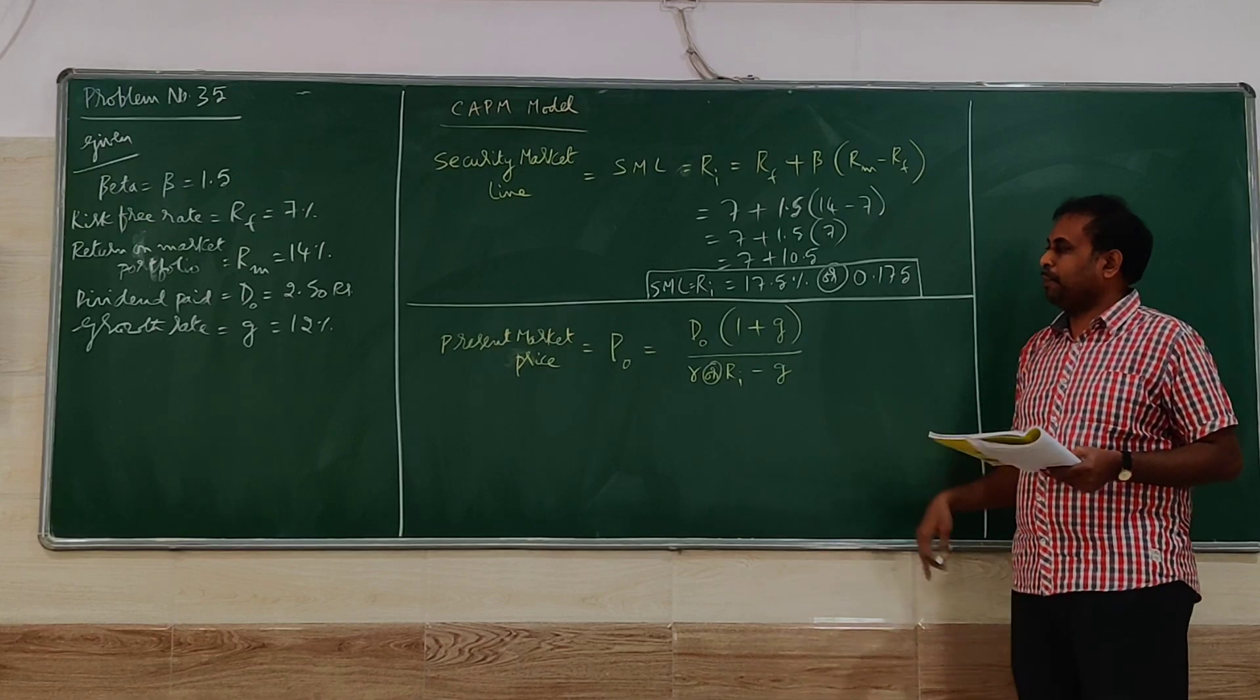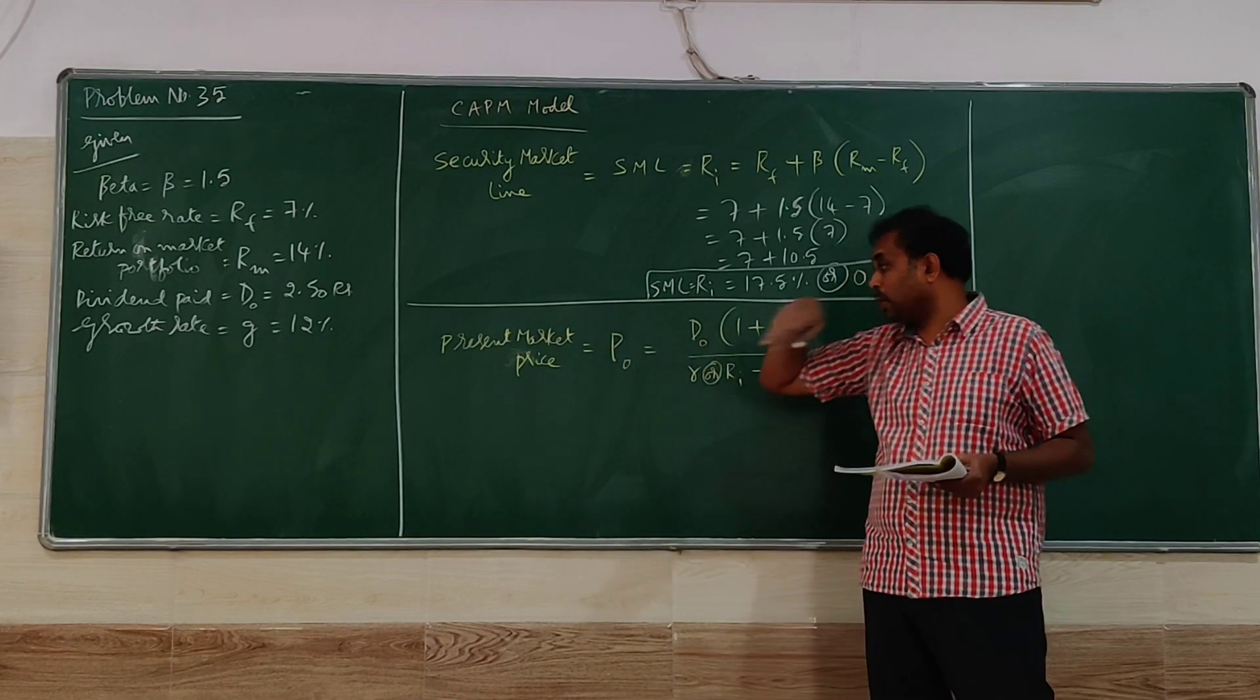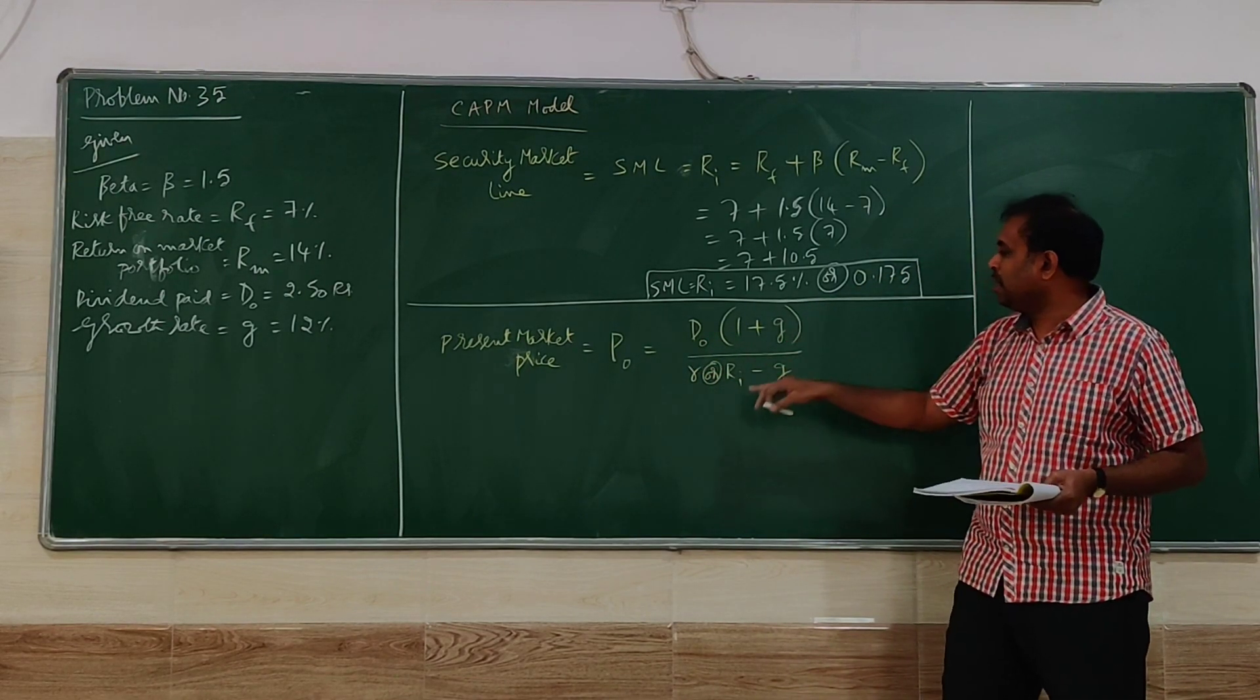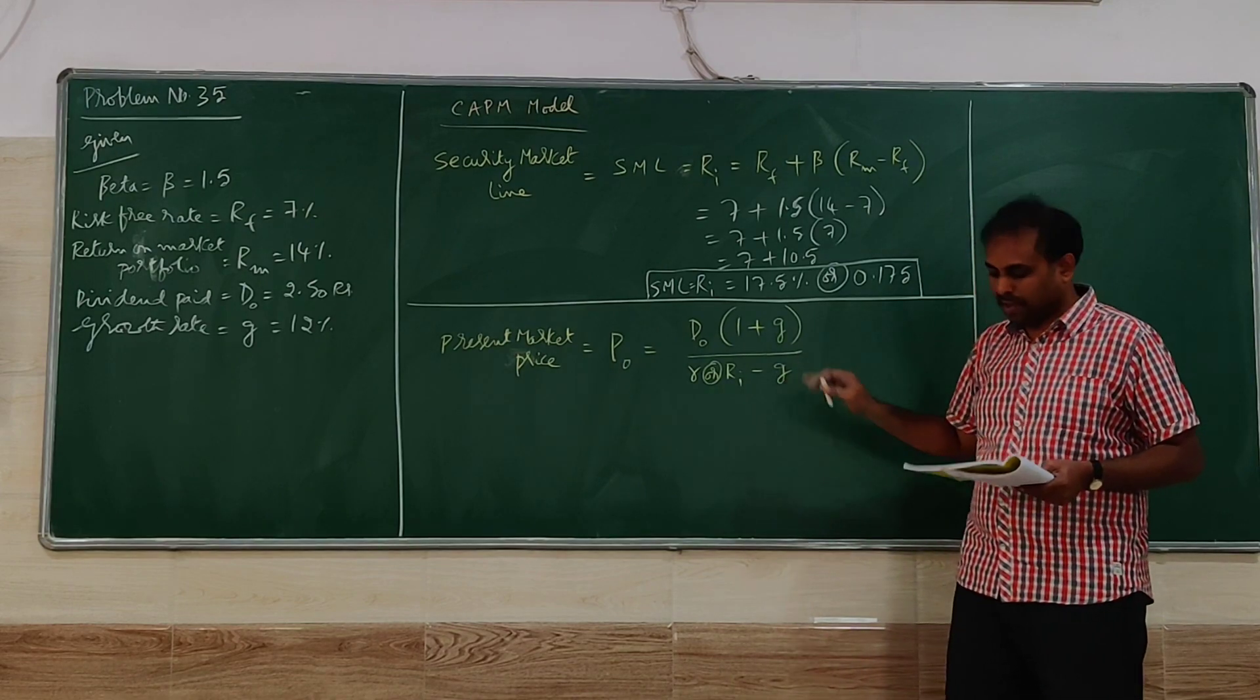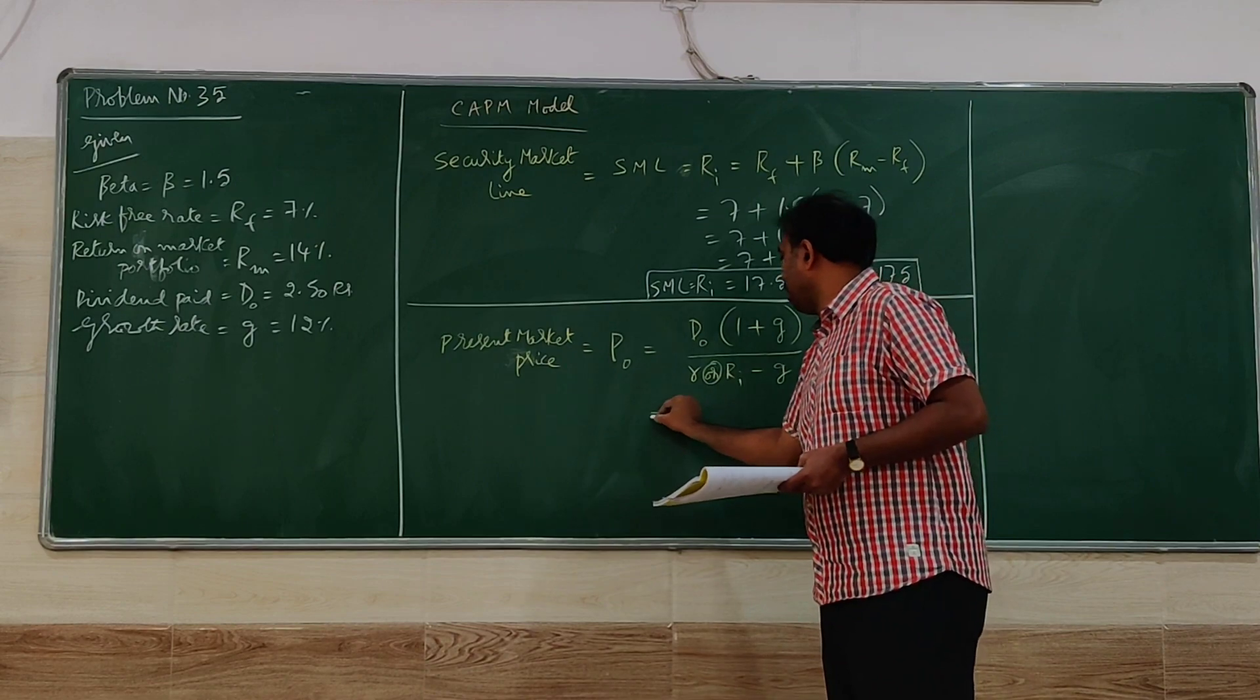Coming to the present market price. Present market price is denoted as P0 that is equal to D0(1 + G) divided by (RI minus G). So RI is nothing but the rate of return.